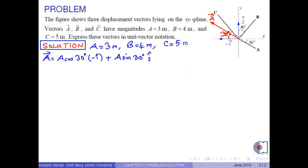If we put the magnitude of a, which is 3 meters, into this equation, we get 3 times cosine 30 degrees minus i hat plus 3 times sine 30 degrees j hat. As a result, vector a in unit vector notation is found to be approximately minus 2.60 i hat plus 1.50 j hat in meters.